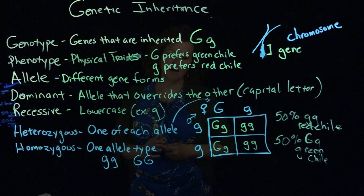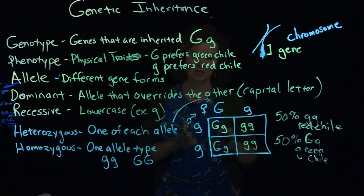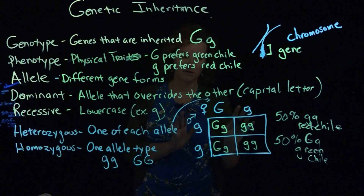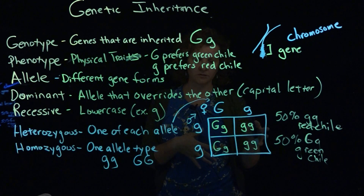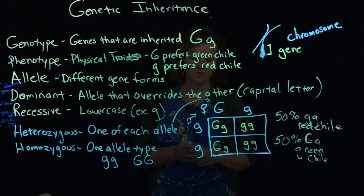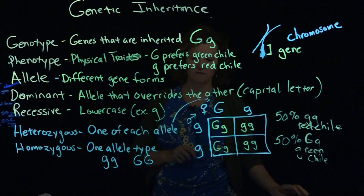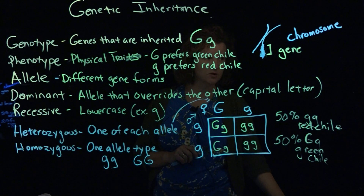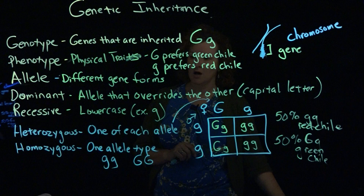Okay, that's all I have for Punnett squares. They can get a lot more complex with alleles for other traits as well, so this is just the very simple starting Punnett square to get you set up. Thank you very much. This is Cory Andres for CFO.